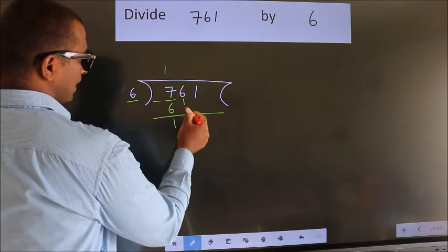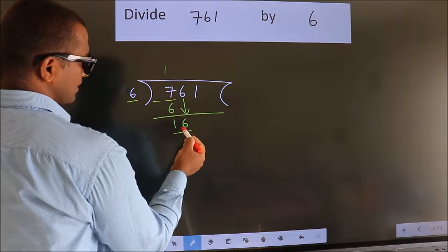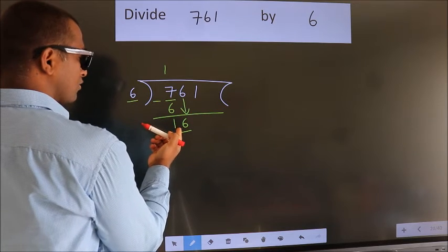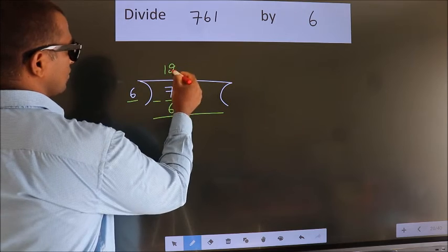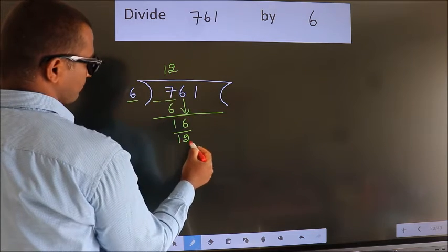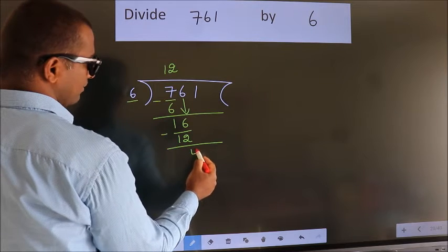After this, bring down the beside number. So 6 down. So 16. A number close to 16 in 6 table is 6 twos, 12. Now we subtract. We get 4.